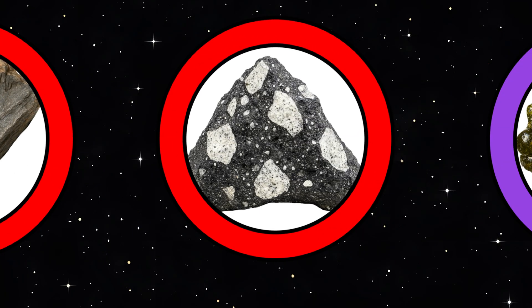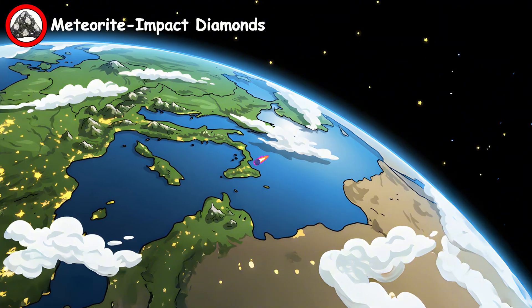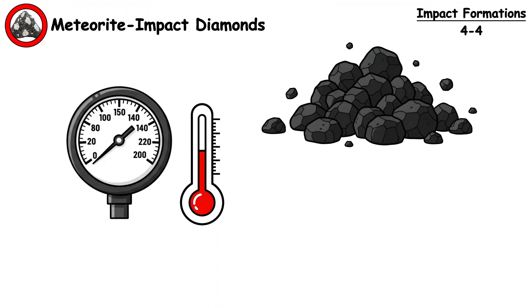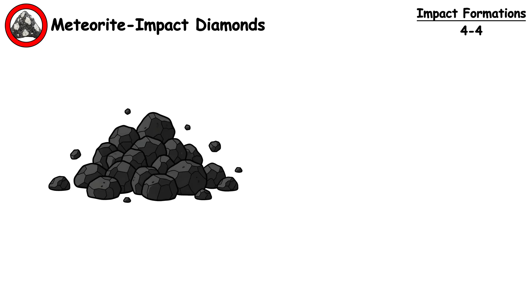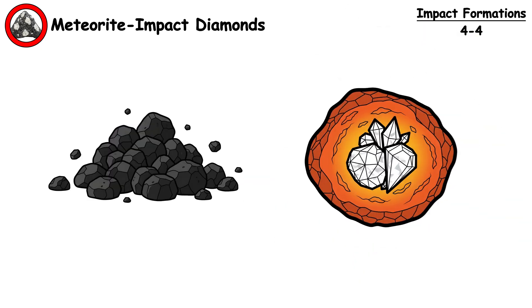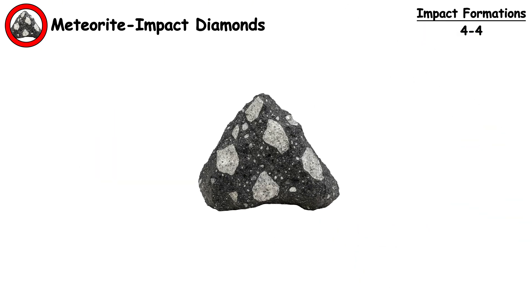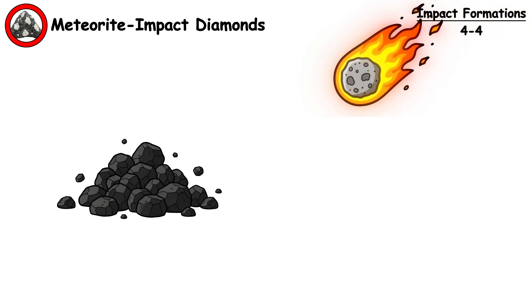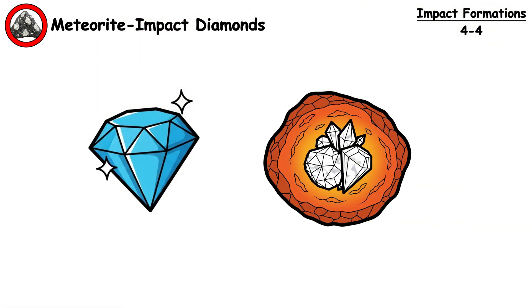Meteorite Impact Diamonds. When meteorites slam into Earth at high speeds, the extreme pressures can transform carbon into diamonds instantly. These differ from geological diamonds formed slowly in Earth's mantle — they're smaller and often imperfect, but created in seconds rather than millions of years.